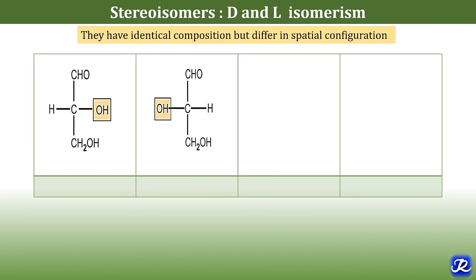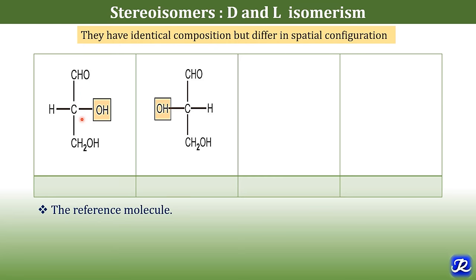This is a structure of glyceraldehyde, which is considered the reference molecule. It is the simplest carbohydrate having three carbon atoms and is taken as a reference molecule to determine the D and L isomers of carbohydrates. Glyceraldehyde has three carbons; the second carbon is the asymmetric carbon atom and is also the reference carbon atom. The D and L isomerism depends on the orientation of the H and OH group around this reference carbon atom.